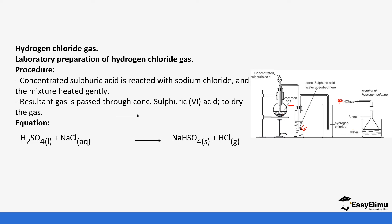Remember when we discussed sulfate and sulfite ions — sulfuric acid is formed by the reaction of sulfur trioxide with water. Sulfuric acid can react with metal ions or ammonium ions by either fully replacing the hydrogen to form sulfate, or partially replacing it to form hydrogen sulfate. In this case, the sulfuric acid reacts with sodium chloride and only replaces one hydrogen atom, forming sodium hydrogen sulfate and hydrochloric acid. Looking at the ionic equation, it is the hydrogen ions in sulfuric acid that react with chloride ions in sodium chloride to form hydrogen chloride gas.